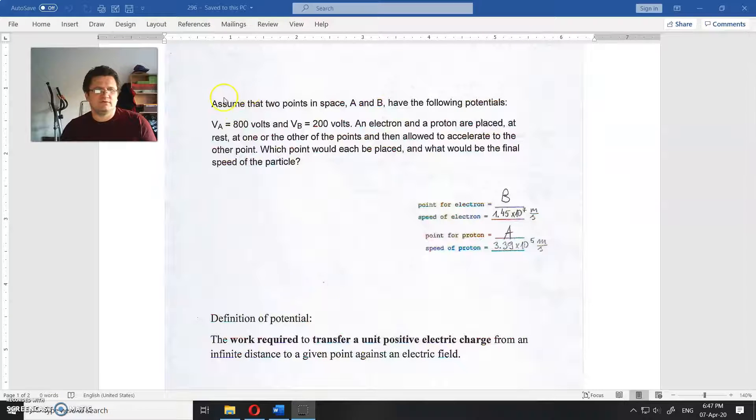This is an assignment, this is part of the solution. Assume that two points in space, point A and B, have the following potentials.